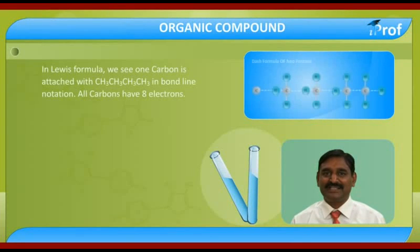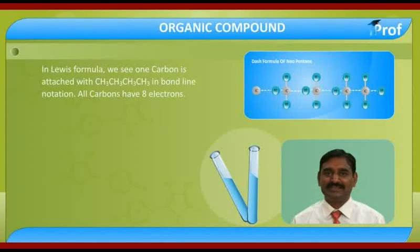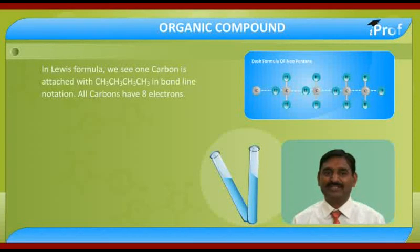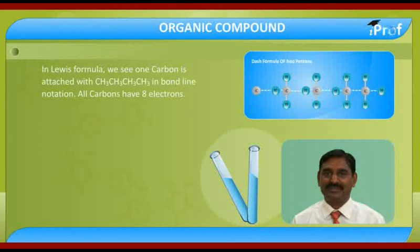When we represent in Lewis formula, here we see one carbon with four CH3 groups attached in bond-like notation. All CH3 groups are represented like that, with four CH3s and carbon attached with hydrogen, hydrogen, hydrogen.